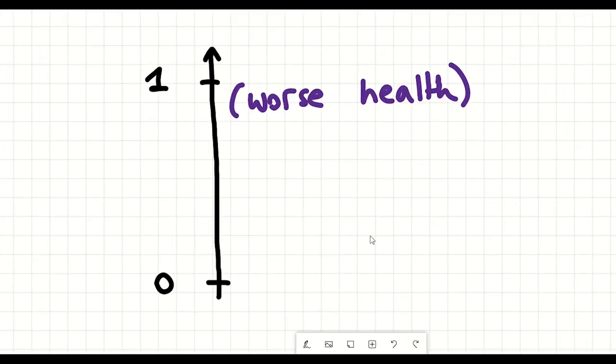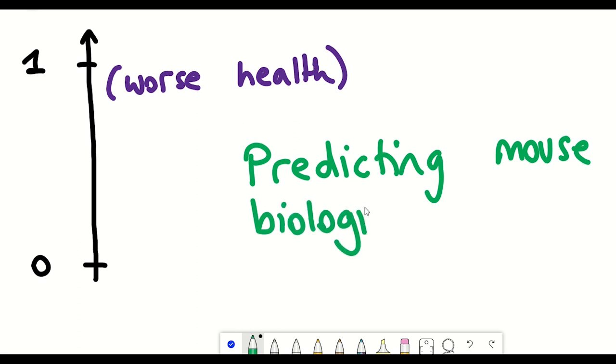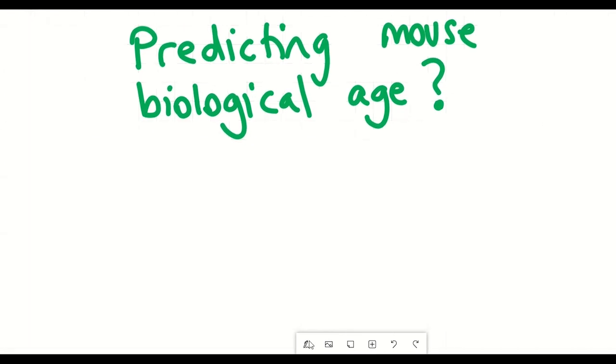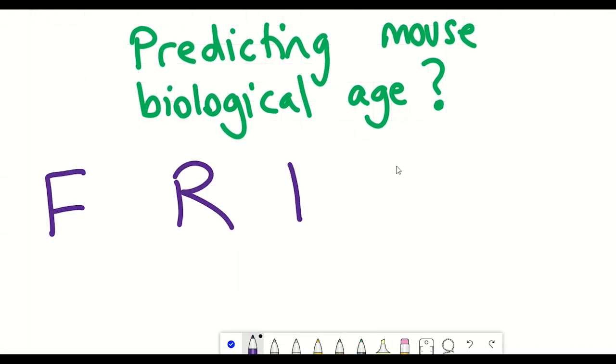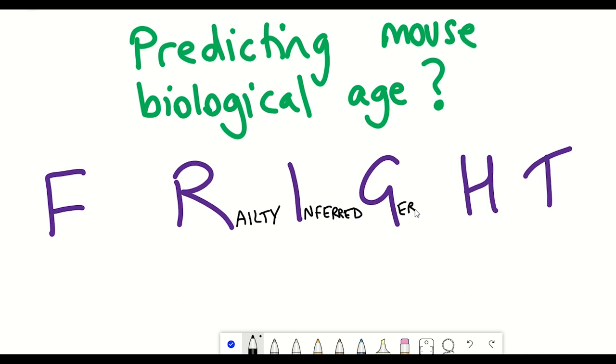And so the authors took this information and tried a variety of different mathematical models to see what would work best. And eventually they decided that the random forest model was most effective. And they termed the outcome clock of their model FRIGHT AGE for frailty-inferred geriatric health timeline.